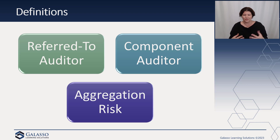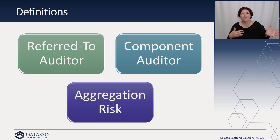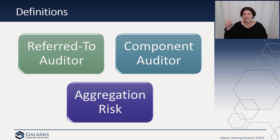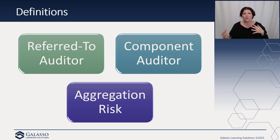This is intended to improve audit quality. The group engagement partner takes responsibility for the direction, supervision, and review of the component auditor's work, just like any other member of the engagement team. This separation of concepts also clears up a common misconception — you can make reference to an auditor and still have a group audit. Now it is clearer as to what we mean when we use the term 'component auditor.'